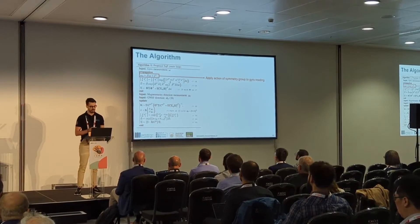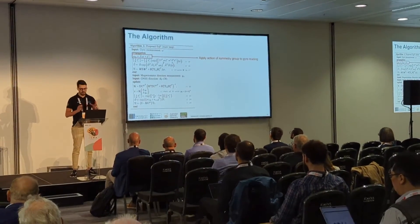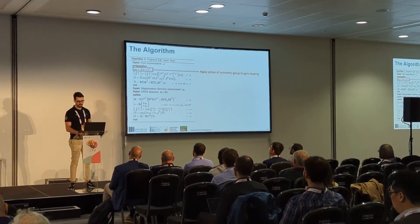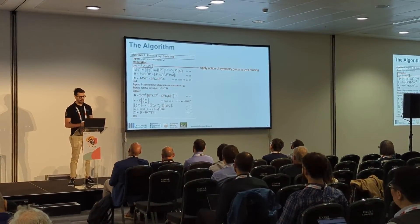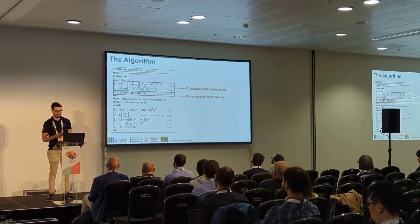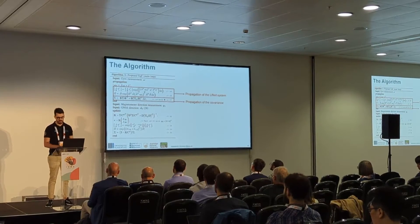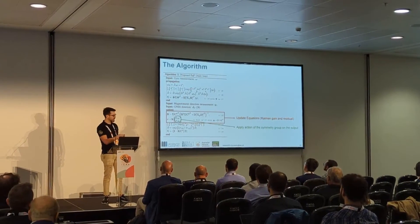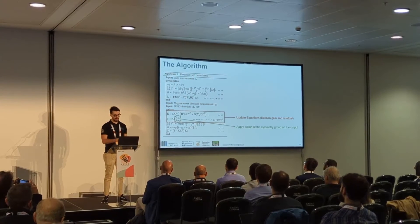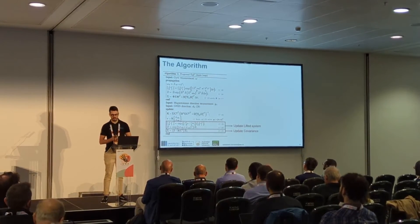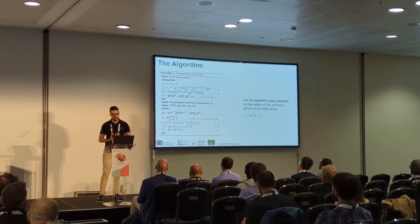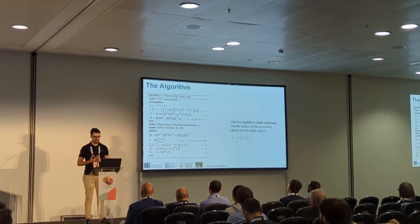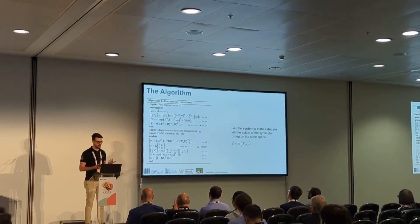Let's leave a little bit of theory and go to the practical algorithm. As you can see, this is the core part of the algorithm and it actually looks like a Kalman filter, with just a few differences. When we get the gyroscope measurements, we apply the action of the symmetry group described before. Then we propagate the lifted system and propagate the covariance using the exponential map of the Lie group. Then we compute the update equation, where we apply the action of the symmetry group on the direction measurement. Finally, we update the lifted system and the covariance. If you want the estimate of the original system and not the estimate on the Lie group, you just need to apply the action phi to recover it.